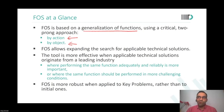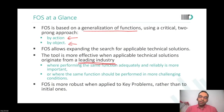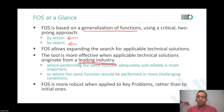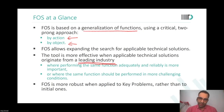You cannot go to every industry and look for solutions everywhere — it will waste a lot of your time. The guidance is that you look for the leading industry. What do we mean by leading industry? Where performing the same function adequately and reliably is much more important than in your industry, or where the same function should be performed in a much more challenging condition. For example, you will mostly find that military applications or space applications qualify. How would you do this in space?